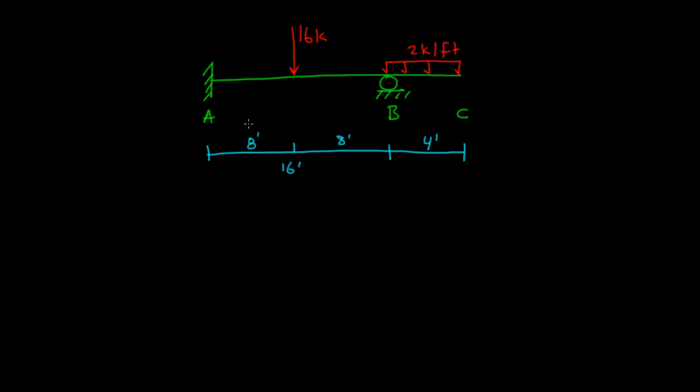Here we have a beam ABC. There's a 16 kip load applied at the mid-span of A and B, and a 2 kip per foot distributed load applied from B to C. The distances are 8 feet, 8 feet, with total length from A to B being 16 feet, and B to C is 4 feet.